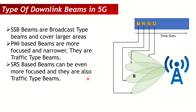Once the UE reads the CSIRS, it generates CSI feedback. As explained in the massive MIMO video, the CSI feedback carries the PMI — the precoding matrix indicator. Once the UE sends the PMI to the gNodeB, the gNodeB uses it to generate a new beam weight — a new beam for that specific UE which is narrower and more focused, providing better signal quality. You can see it is more narrower and focused compared to the corresponding SSB beam, allowing the UE to achieve better throughput.